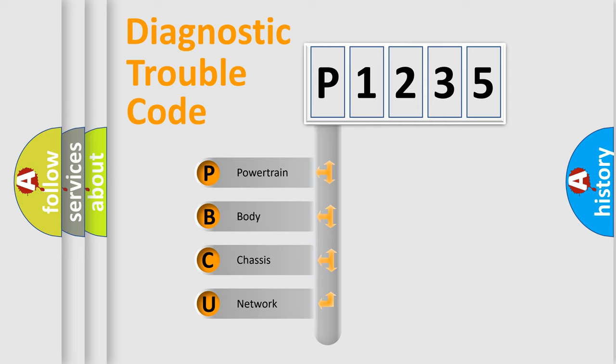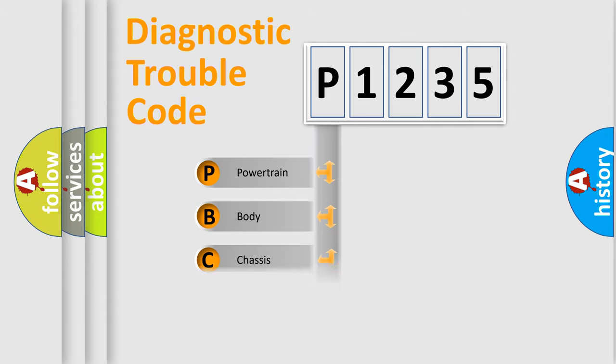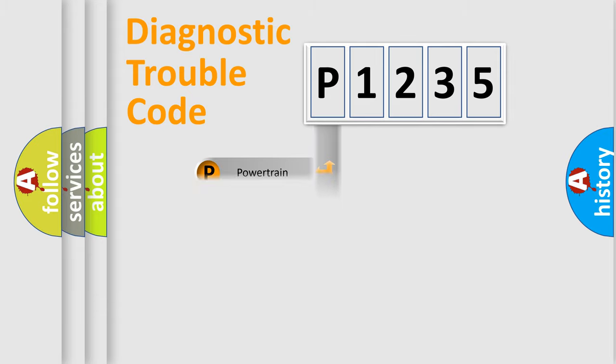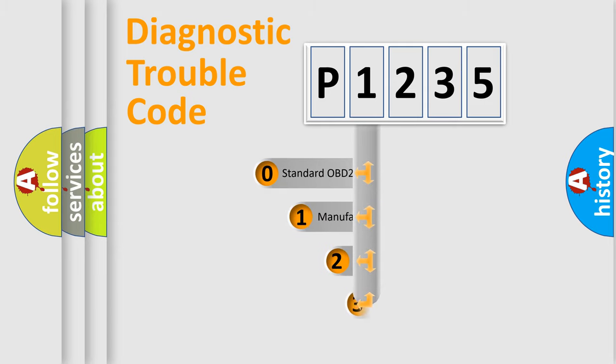We divide the electric system of an automobile into four basic units: Powertrain, Body, Chassis, and Network. This distribution is defined in the first character of the code.